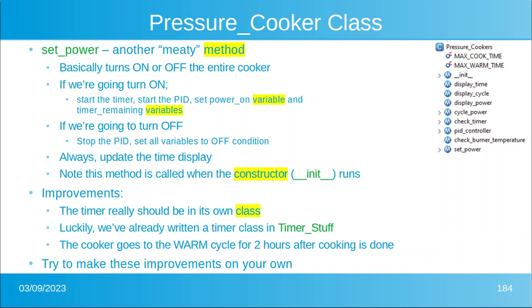This method is also called when the constructor runs, because we want to make sure we set the power off the very first thing when you plug the machine in. Now we can have some improvements to this class. The timer really should be by itself, but luckily you've already written the timer class — we called it timer stuff — so we can just use it. And the cooker maybe goes to the warm cycle for two hours after cooking is done. That's actually how my pressure cooker works. So try to make these improvements on your own — they're pretty simple, but it gives you an idea that no matter what you do, you can always improve it.